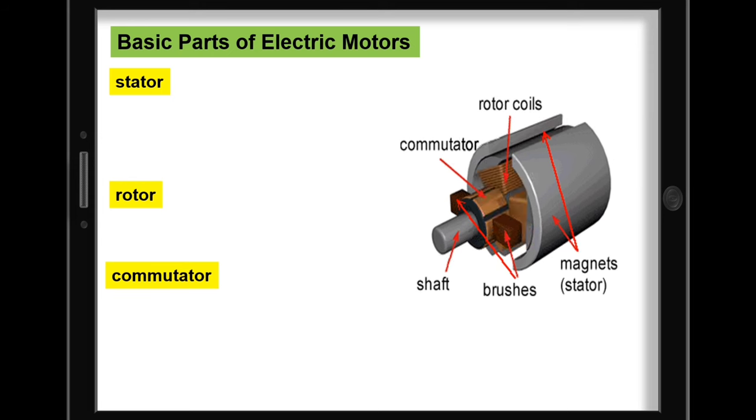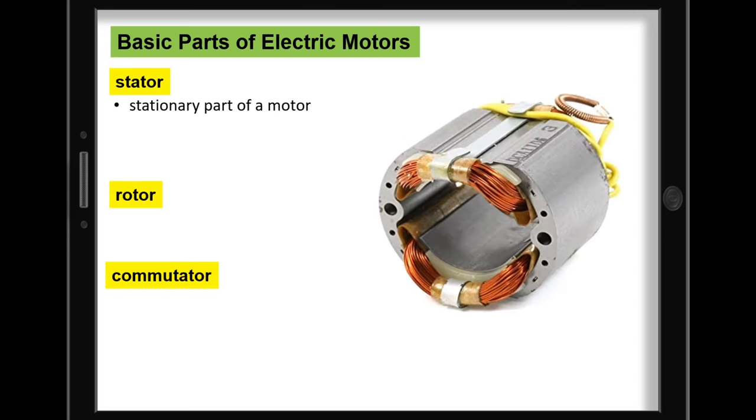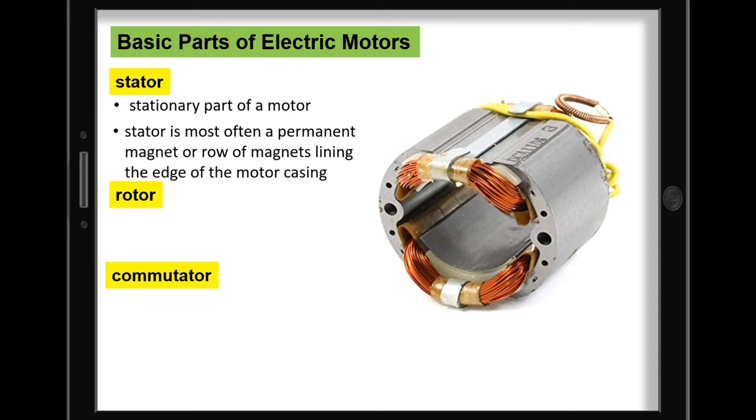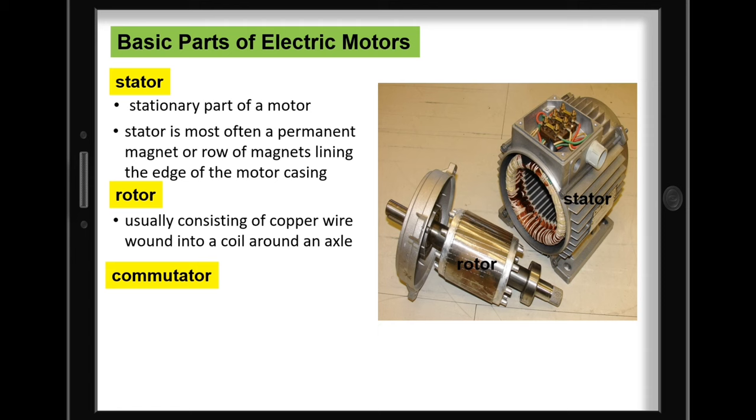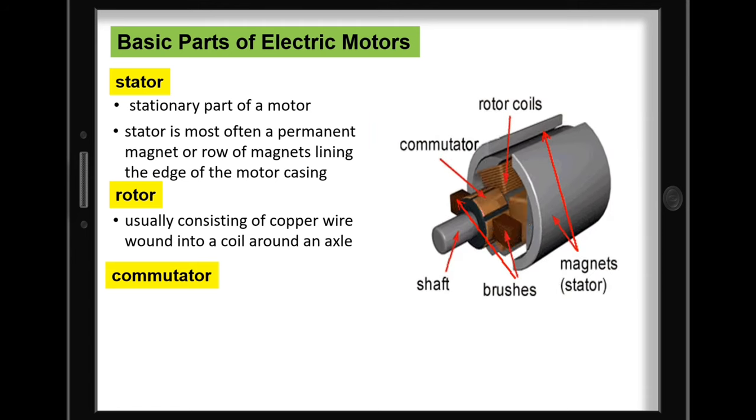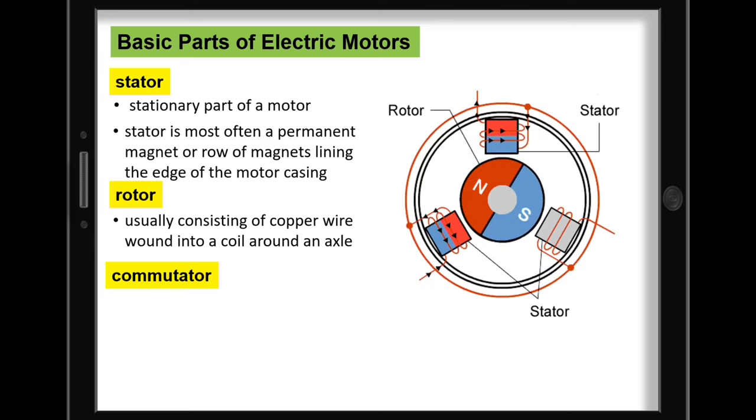Every electric motor has two essential parts: one is stationary and one that rotates. The stationary part is the stator. The stator is most often a permanent magnet or row of magnets lining the edge of the motor casing. Inserted into the stator is the rotor, usually consisting of copper wire wound into a coil around an axle. When electric current flows through the coil, the resulting magnetic field pushes against the field created by the stator and makes the axle spin.